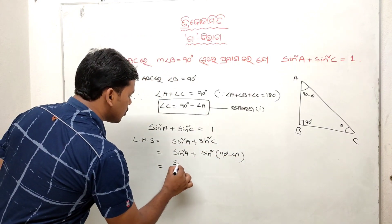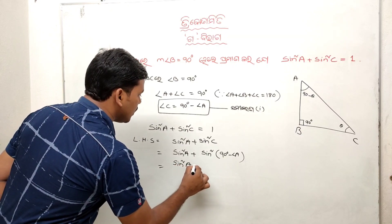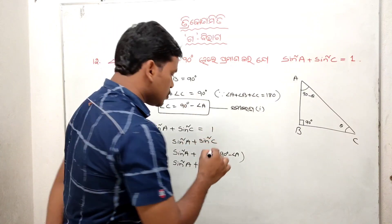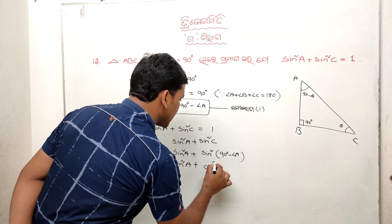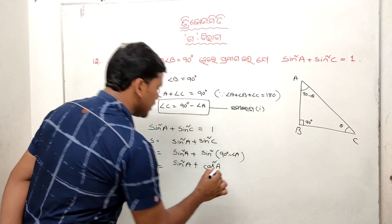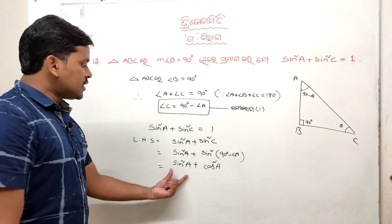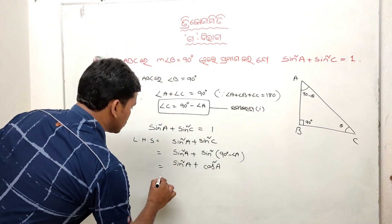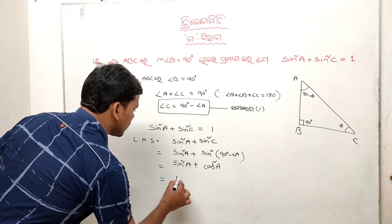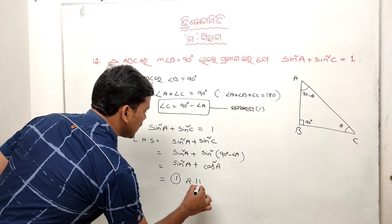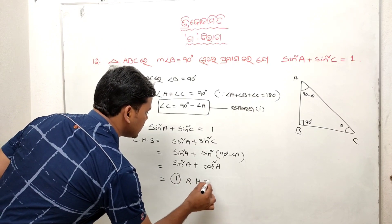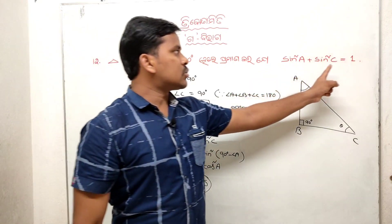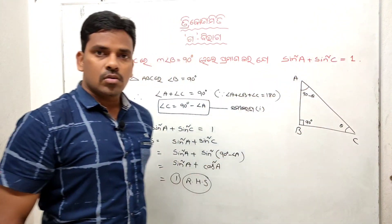So sin squared A plus sin(90 minus A). Using the formula sin(90 minus theta) equals cos theta, this becomes cos squared A. Then applying the formula sin squared theta plus cos squared theta equals 1, we get sin squared A plus cos squared A equals 1.